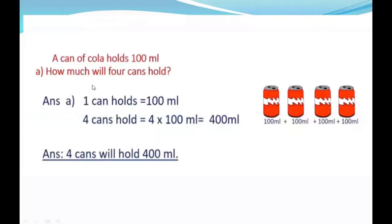Look at this question. A can of cola holds 100 milliliters. How much will four cans hold? So if one can holds 100 milliliters—one, two, three, four—that's 100 plus 100 plus 100 plus 100. Instead of adding the same number repeatedly, you can use multiplication. That will be easier. One can holds 100 milliliters, so four cans hold 4 times 100, which equals 400 milliliters.